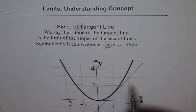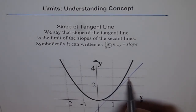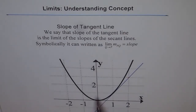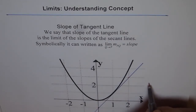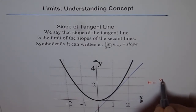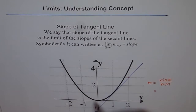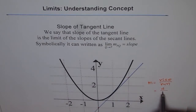Slope is rise over run. Taking two points on the tangent line: the rise is 1, 2, 3, 4 and the run is 1, 2. So the slope m equals rise over run. For this case, rise is 4 and run is 2, which gives us a slope of 2 at x equals 1. That is the slope of the tangent line we have drawn.